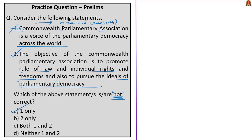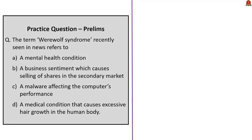This question is about werewolf syndrome. A few kids in Spain were affected by this syndrome because of a medicine mix-up or wrong treatment for gastric reflux. This syndrome is also called hypertrichosis, which refers to excessive hair growth. The correct answer is option D: a medical condition that causes excessive hair growth in the human body.